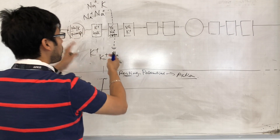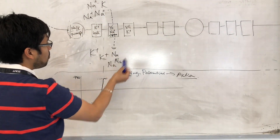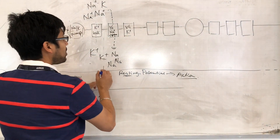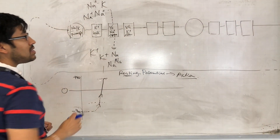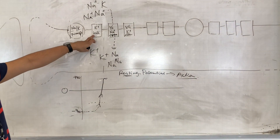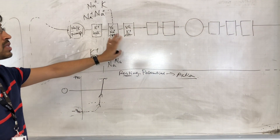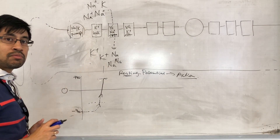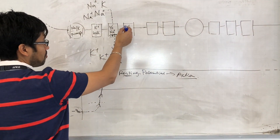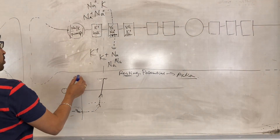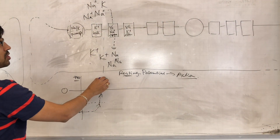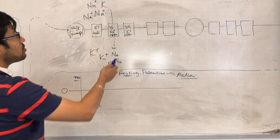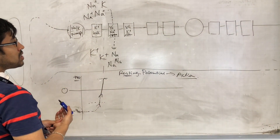First, let's look at what happens next: how does this thing go back to normal? Now that it's so positive inside the cell at plus 40, at this voltage, the voltage-gated potassium channels open. These are not the same as the leak channels — these are voltage-gated potassium channels which will only open under a certain voltage. When that voltage is reached — plus 40 — the voltage-gated potassium channels open, and the events to start bringing everything back to normal are triggered.